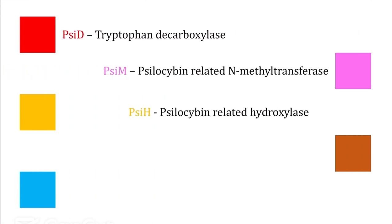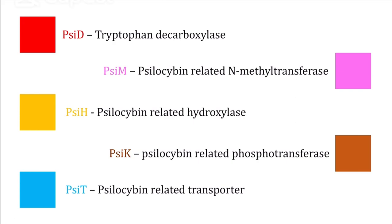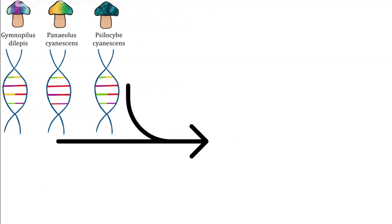predicted functions were consistent with the psilocybin biosynthesis and metabolite transport—those being psi-D, psi-M, psi-H, psi-K, and psi-T. The orthologues of these groups shared 75 to 95 percent similarity between all the psilocybin-producing